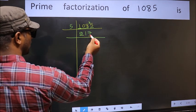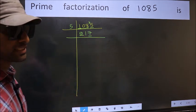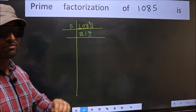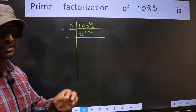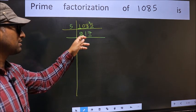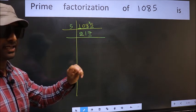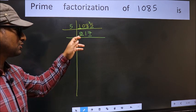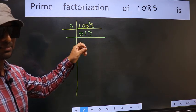Now here last digit is 7, not 1, so this is not divisible by 2. Next prime number is 3. To check divisibility by 3, we should add the digits. What I mean is 2 plus 1 plus 7. We get 10. Is 10 divisible by 3? No. So this number is also not divisible by 3.